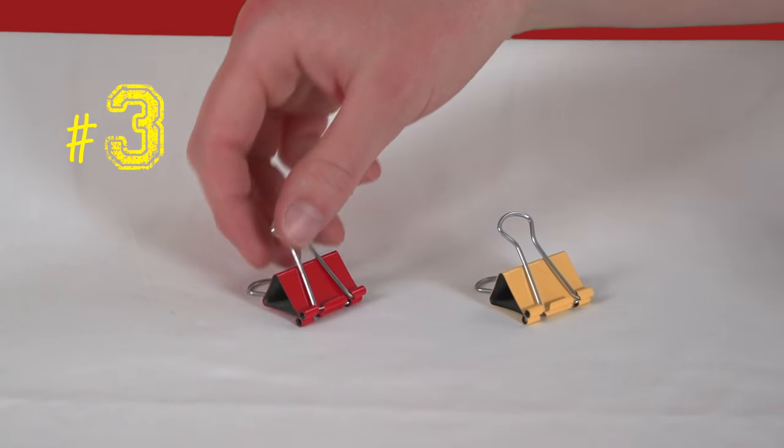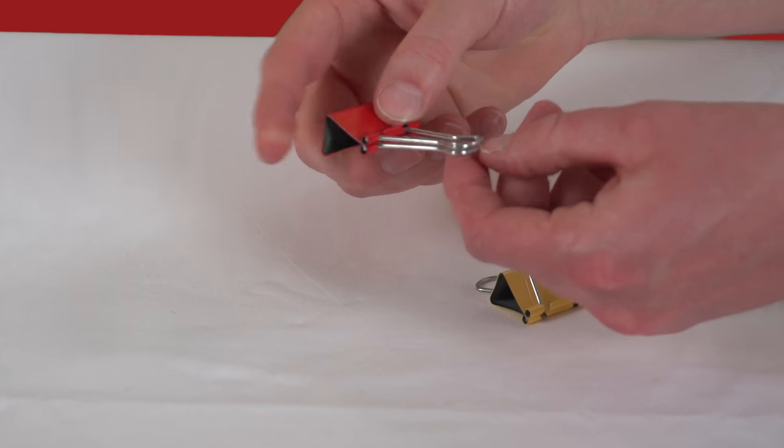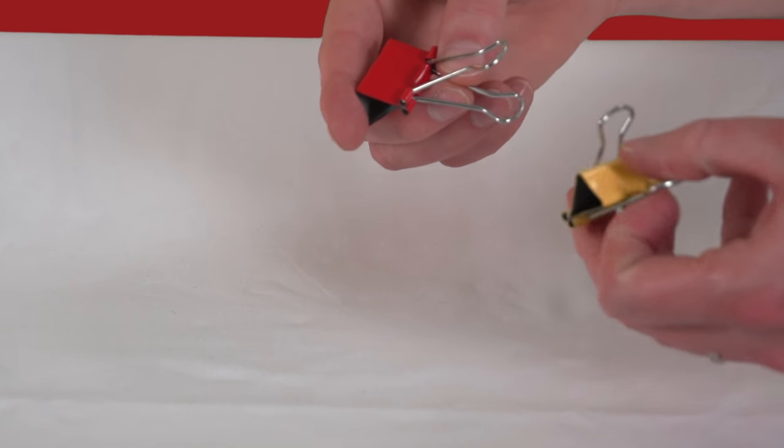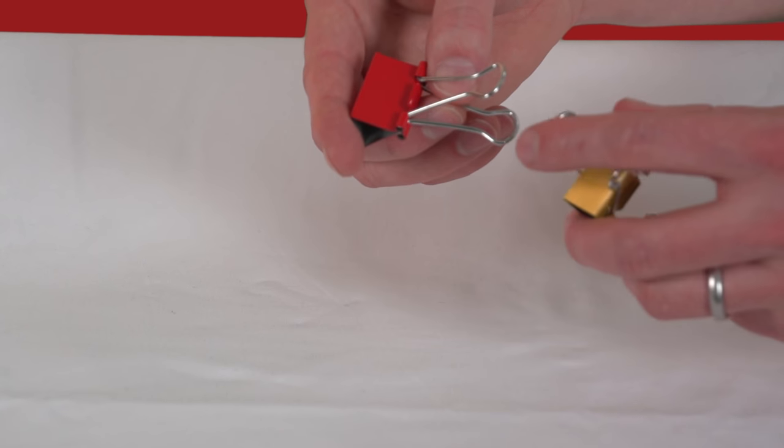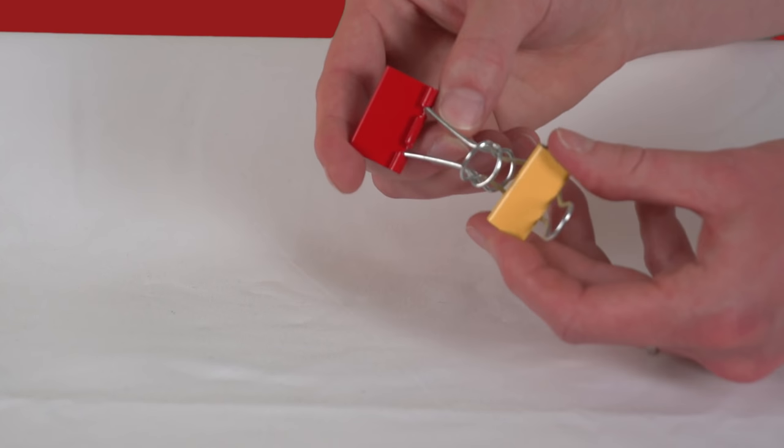And last but certainly not least, start by folding a clip's handles back again and then open them up a bit. Now take your other clip and what you need to do is thread this top handle into the top handle of the other clip. Just like that.